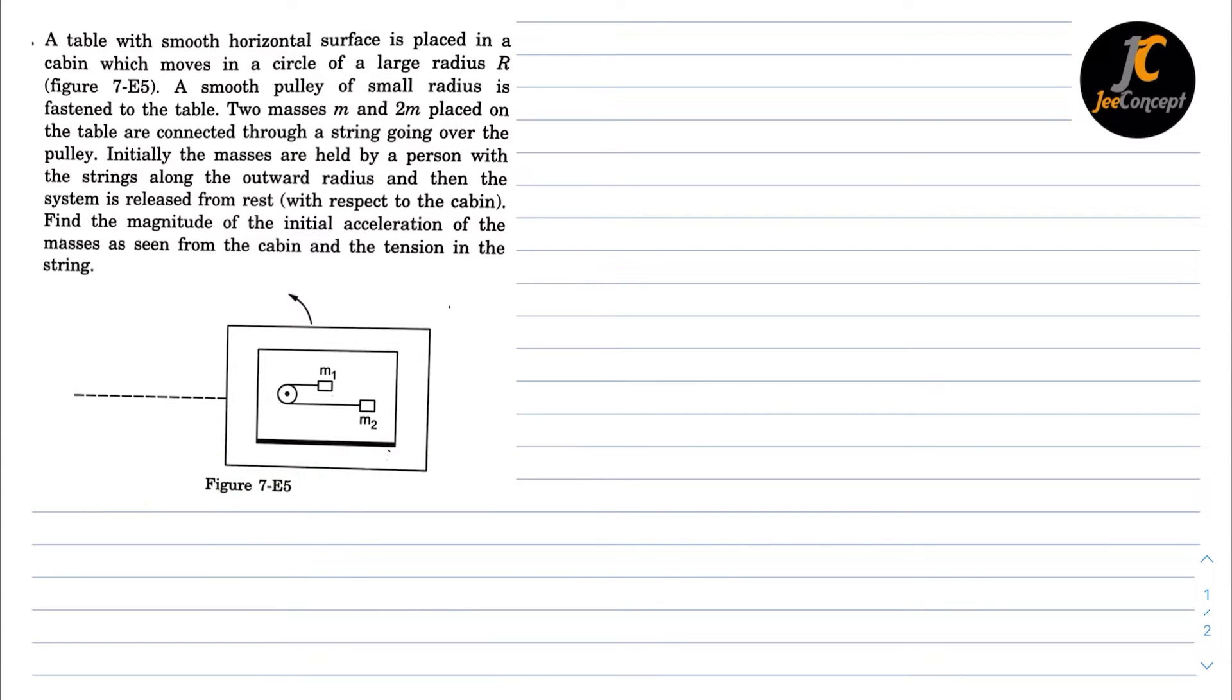So this problem is quite straightforward. Let's see, the tension in the string will be in this direction. Due to rotation, M R omega square, let's say this is M1, and M2 R omega square will act in the outward direction.